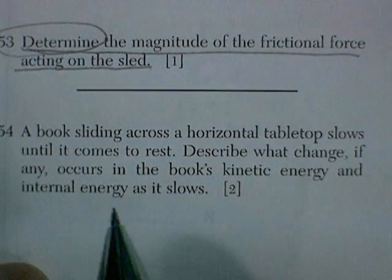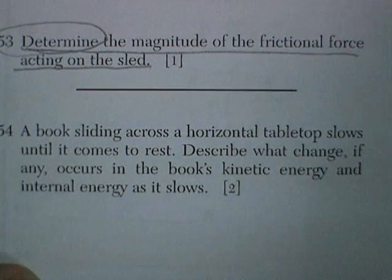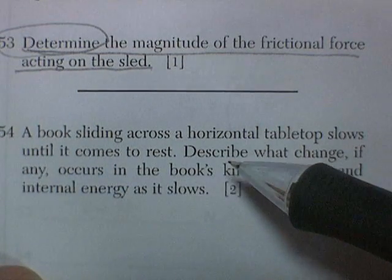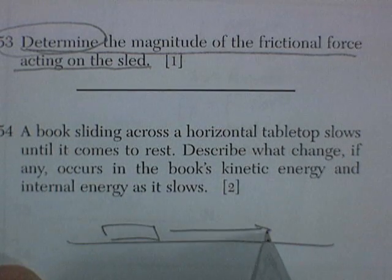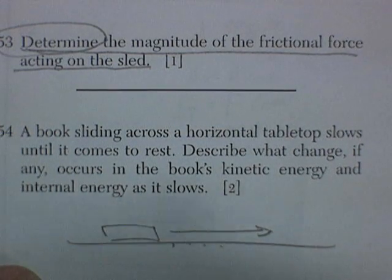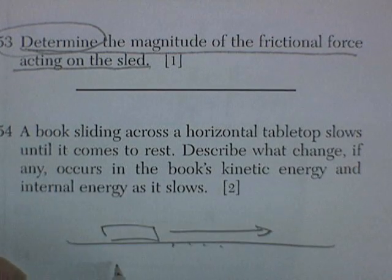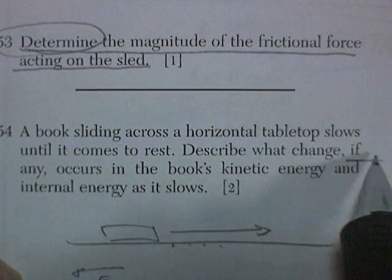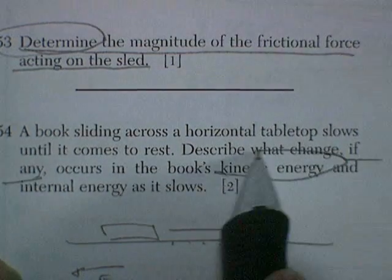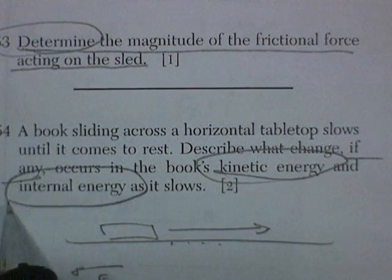Question 54: A book sliding across a horizontal tabletop slows until it comes to rest. Obviously friction causes it to slow. Describe what change, if any, occurs in the book's kinetic energy and internal energy.